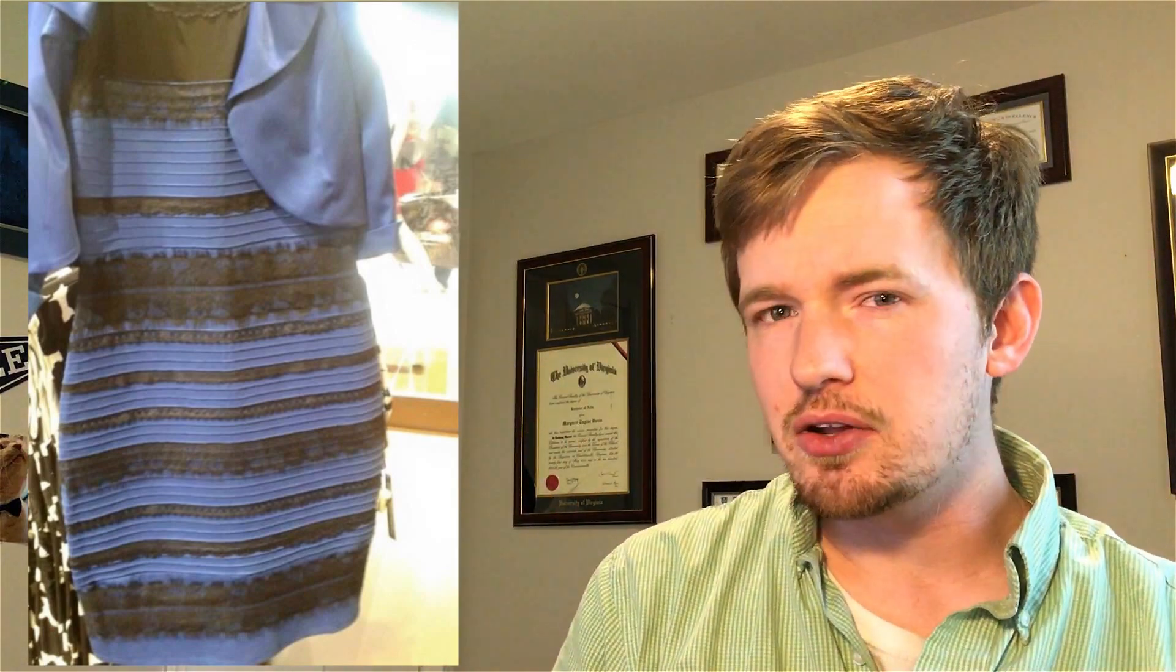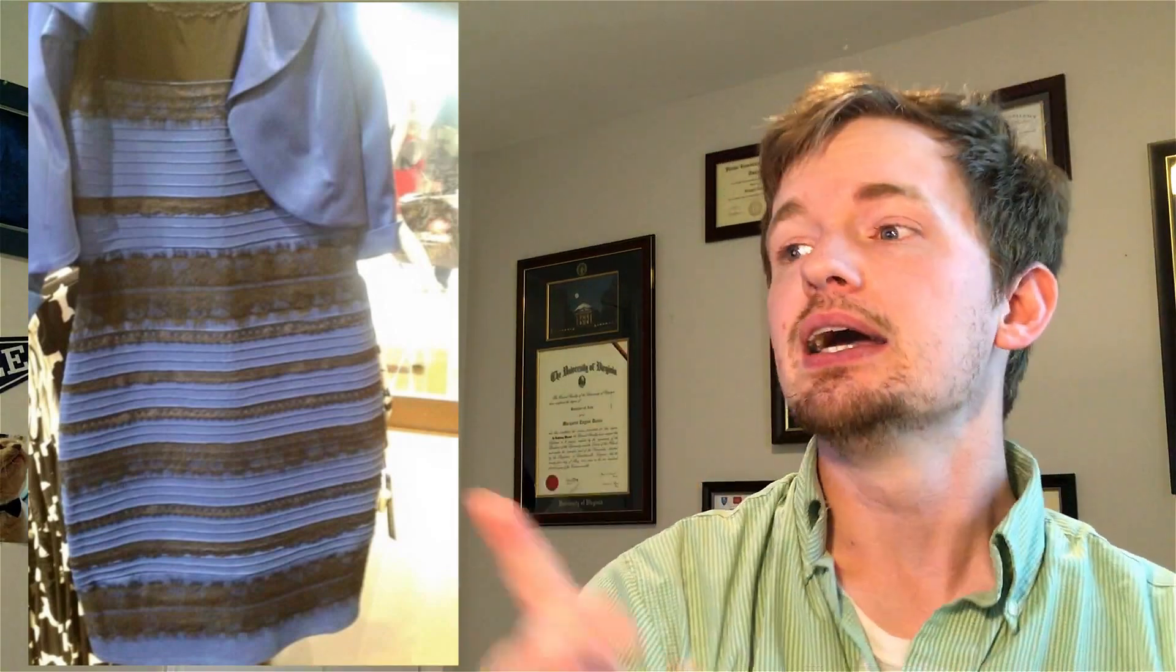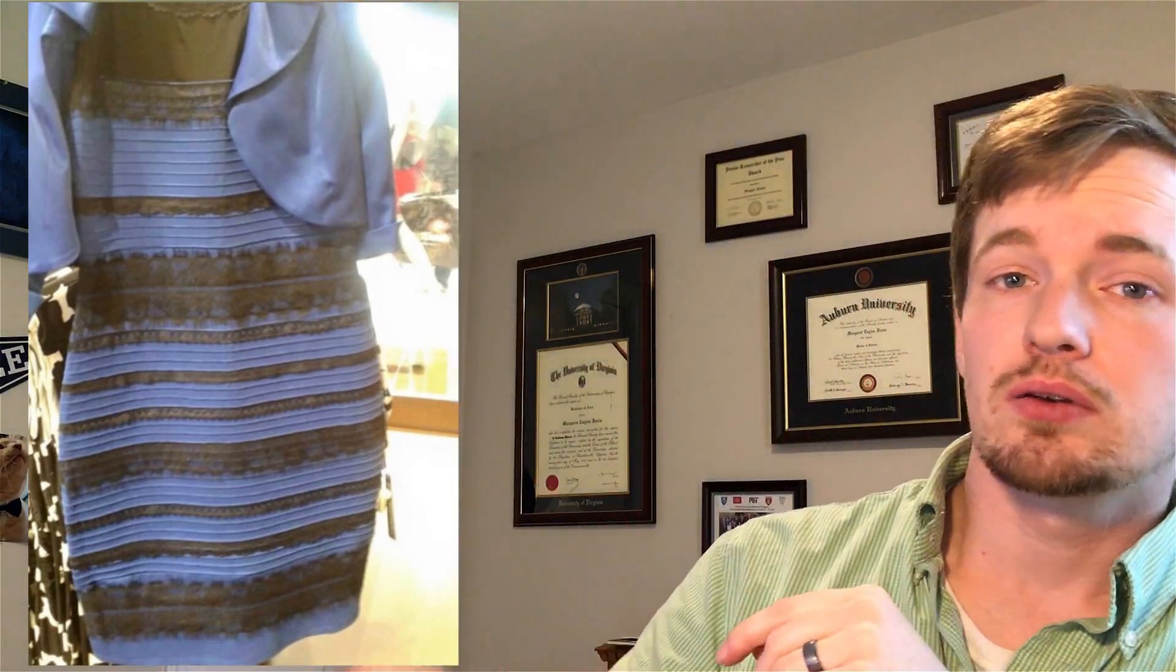Now if you detect this as being white and gold, then things are a little bit different. You're detecting that light source to actually be coming from behind the dress—from maybe a window or some kind of sun, some big light fixture behind the dress. So what you're seeing, what you're perceiving, is that there's a shadow falling across the dress, and what your eyes are picking up on are these colors with a shadow over them.